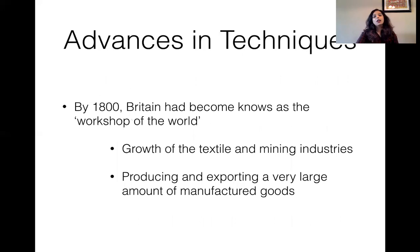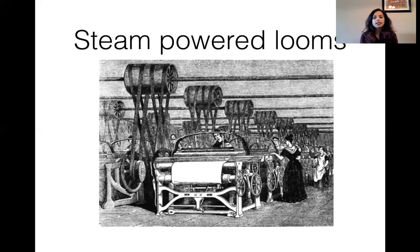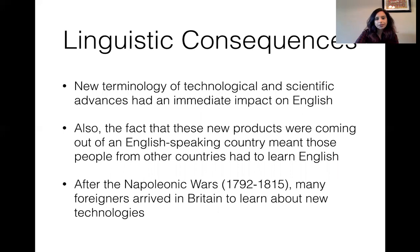By 1800, by the end of the Late Modern English era, Britain becomes the workshop of the world. There were a lot of textile and mining industries that Britain was famous for, and they also produced a large number of manufacturing goods. Here is a photo of steam-powered looms, and as you can see, a lot of women were working in the factories. Things became cheap, could be traded with other countries, and given to Britain's colonies.